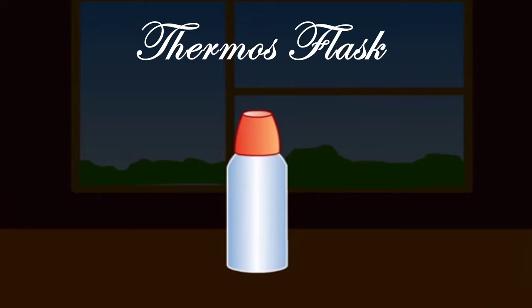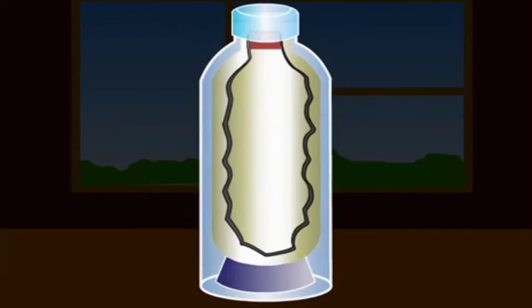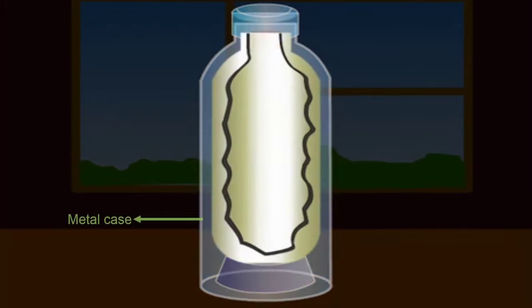Let us see its construction to understand the principle. A thermos flask consists of a double-walled glass bottle.